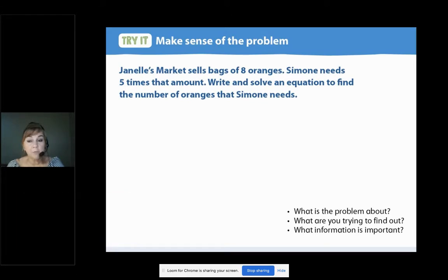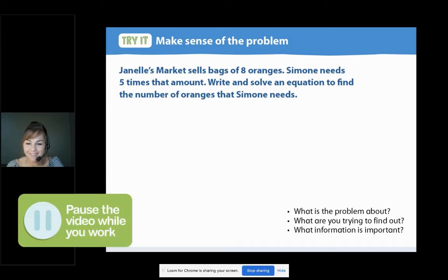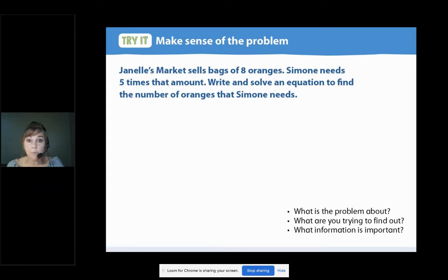Did you say something about writing an equation to find the number of oranges? Sure, you're on the right track. Now I want you to read it the third time, and you're going to write down the important information. Go ahead and pause. For the important information, did you write one bag has eight oranges and Simone needs five times that amount or something like that? Great thinking.